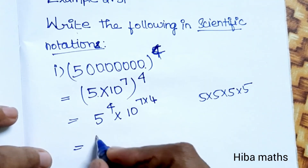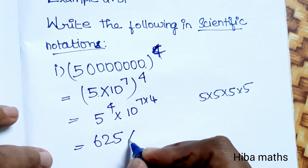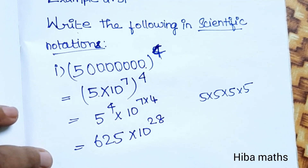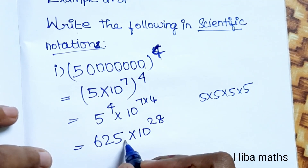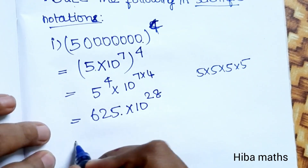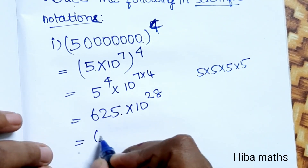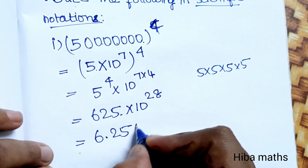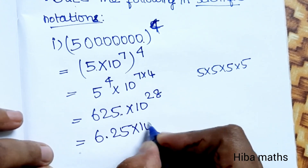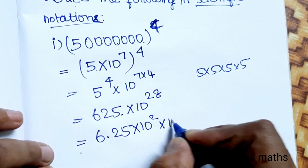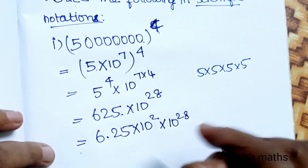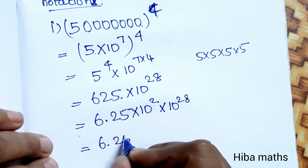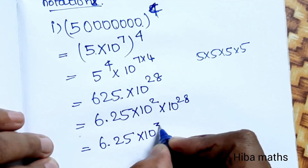625. So 625 into 10 power 7 — 4 is equal to 28. Now the point is here. If you look at scientific notation, 6.25 — if you look at 6.25 — so if you look at 10 power 2. Already there is 10 power 28, so if you look at these two together.